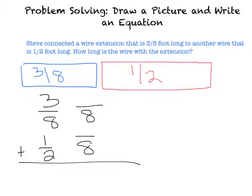Now let's turn these into equivalent fractions. 2 times what is going to give me 8? Well, that's going to be 4. So I'm going to times 4. So 1 times 4 is 4. And then down here, 8 times what equals 8? Well, that's 1. So I'm going to multiply by 1. And then 3 times 1 is 3.